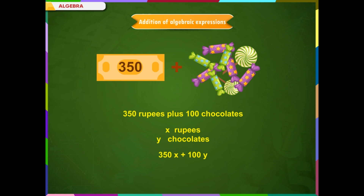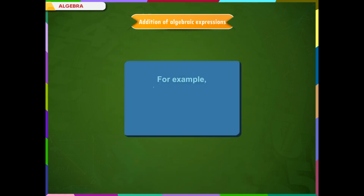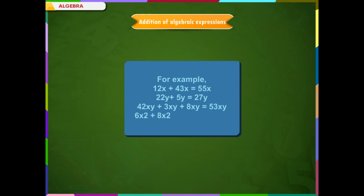We can say that like terms can be added but unlike terms cannot be added. For example: 12x + 43x = 55x; 22y + 5y = 27y; 42xy + 53xy (combined); 6x² + 8x² + 13x² = 27x².